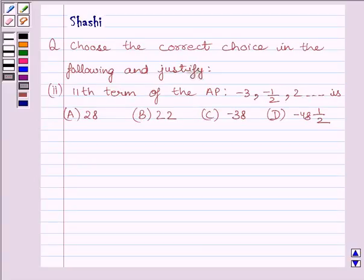Hi and welcome to the session. I am Shashi. Let us do one question. Question is: choose the correct choice in the following and justify. 11th term of the AP: -3, -1/2, 2... is (A) 28, (B) 22, (C) -38, (D) -48 1/2. We have to choose the correct answer.